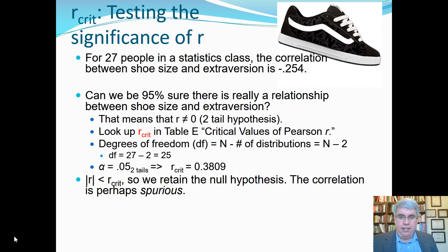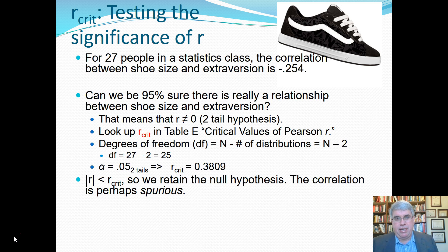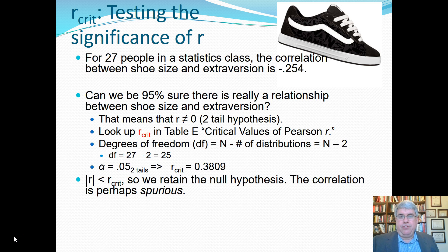Let's start off with a statistic I collected in the class. It was 27 people, and the correlation between shoe size and extraversion was minus 0.254. Extraversion is how talkative, how social, how outgoing, how dominant somebody is. We had a negative correlation — as shoe size got larger, extraversion went down. That seems like a strange correlation — why would people with larger shoes be less extroverted?